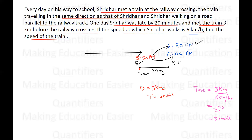So students, we know the distance and we know the time taken by the train, so we can find the speed of the train. Speed of train equals distance upon time. Converting time into hours: three divided by ten-sixtieths, which is 3 by (10/60), giving 3 × 6 = 18 kilometers per hour. So this is the speed of the train. I hope this is clear to everyone.